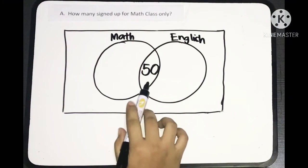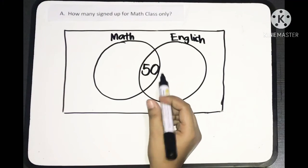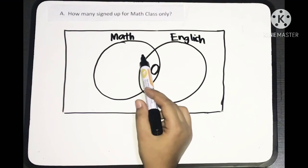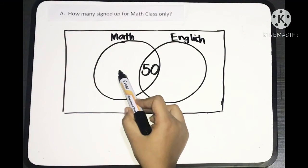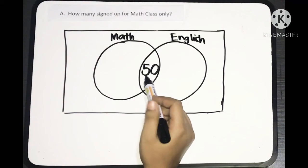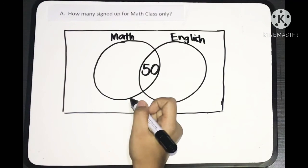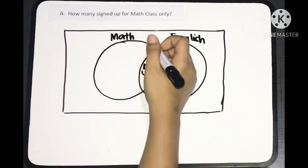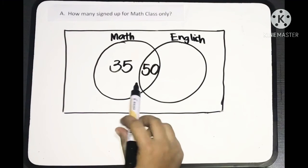So, 50 registered for both math and English. And to answer the first question, according to the given, 85 registered for math class. Then we already have here the intersection, which is 50. Now, what we're going to do is subtract 50 from 85, so that we'll know how many registered for math only. So, we'll have 85 minus 50, which is equal to 35. So, we'll have 35 here, who signed up for math only.